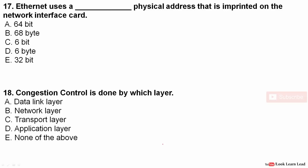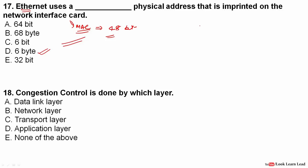Ethernet uses a physical address that is imprinted on the network interface card. This is the MAC address. It is 48 bits in size, which equals 6 bytes. In contrast, at the network layer, IP addresses are 32 bits, which is 4 bytes. So the answer is 6 bytes, which equals 48 bits.